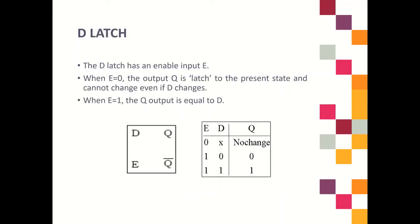Our last device is D latch. When we talk about a latch, it means this device does not have a clock. The D latch has an enable input E. Because D operation only has one input D, you need another control signal to determine the Q output. For D flip-flop, although you have only one input D, you can find Q because you have a clock. But for D latch, you need enable input E to control the Q value.